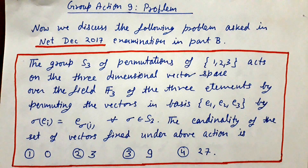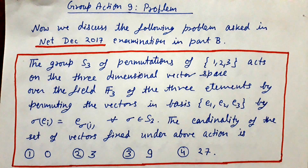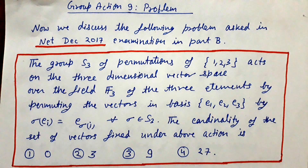The problem is: the group S3 of permutations of {1, 2, 3} acts on the three-dimensional vector space over the field F3 of three elements by permuting the basis vectors E1, E2, E3 by sigma(Ei) = E_{sigma(i)} for all sigma in S3. The cardinality of the set of vectors fixed under this action is: option 1) 0, option 2) 3, option 3) 9, option 4) 27.